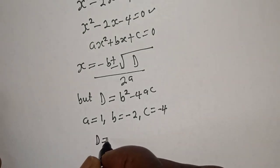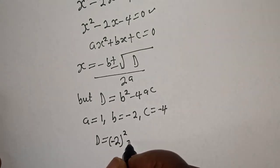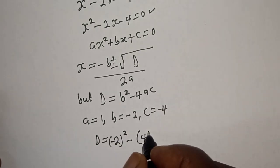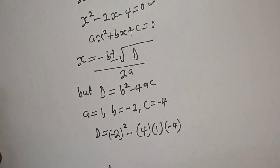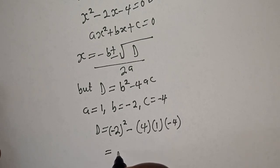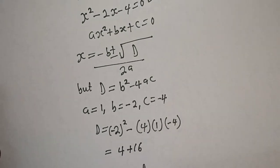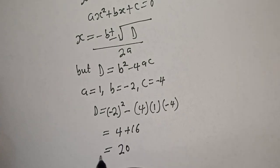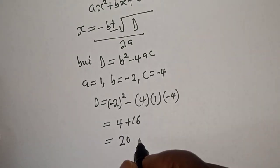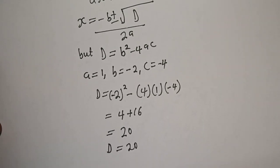The discriminant d equals b squared minus 4ac. That is: minus 2 squared minus 4 times 1 times minus 4, which equals 4 plus 16, giving d equal to 20.